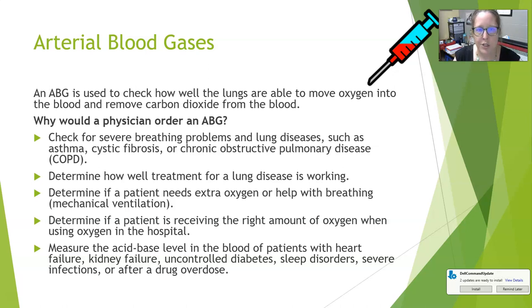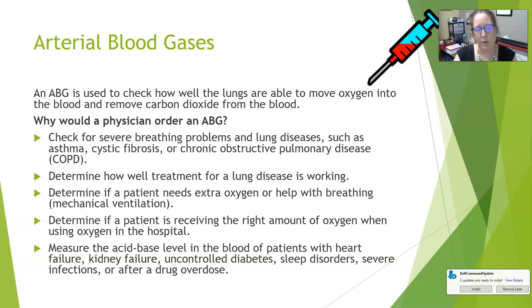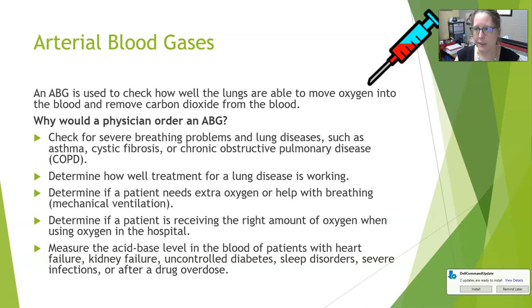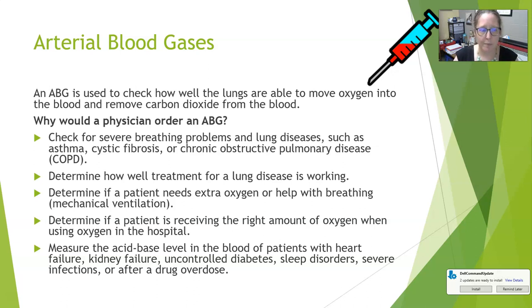An ABG is used to check how well the lungs are able to move oxygen into the blood and remove carbon dioxide from the blood. A physician might order an ABG to check for severe breathing problems in lung diseases such as asthma, cystic fibrosis, or COPD — which includes emphysema and chronic bronchitis — or to determine how well a treatment for a certain lung disease is working.